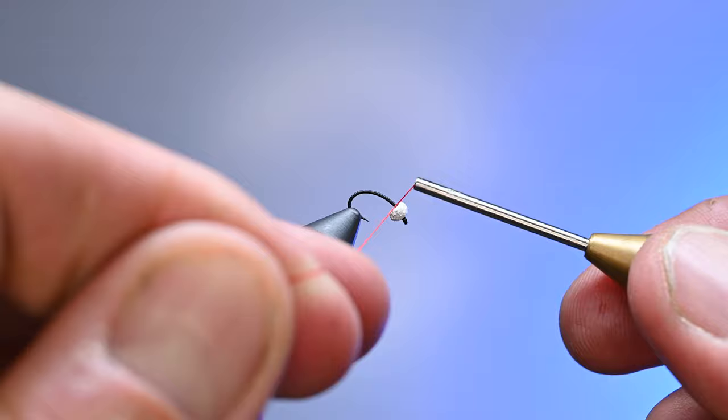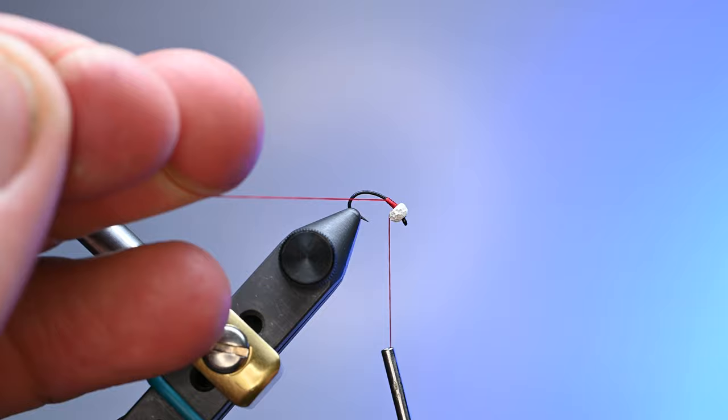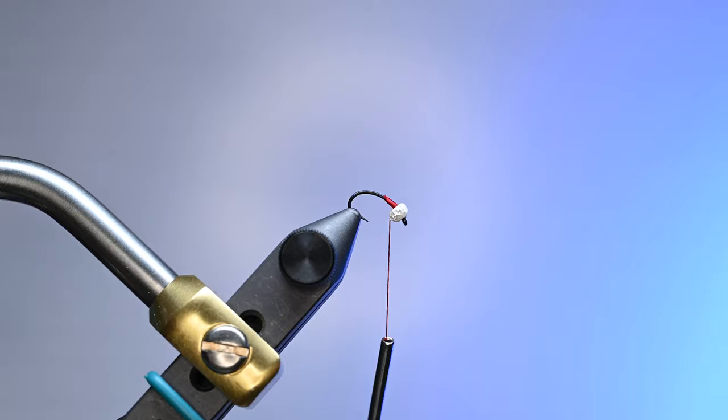It makes it a little bit easier to tie personally because we're going to be going well into the bend. Make sure that hook is secure. We're going to start our thread - I'm doing red thread - and we'll do about five to six wraps down and then advance back up. This is going to help build the taper and make sure my thread is right behind the bead.